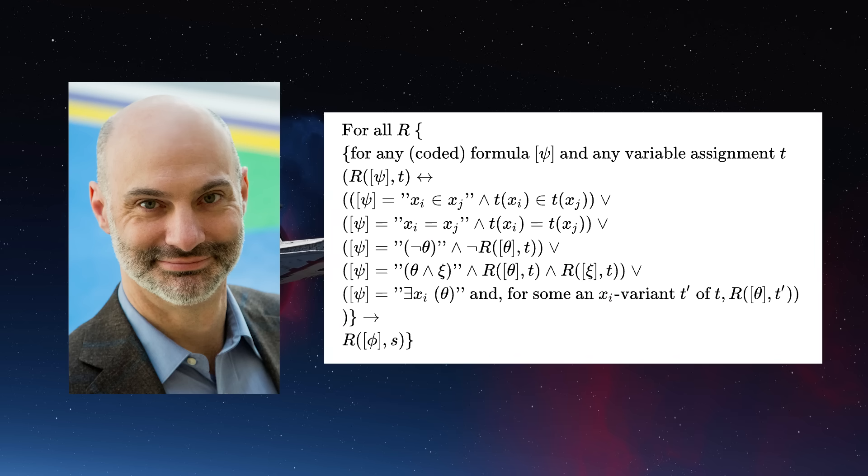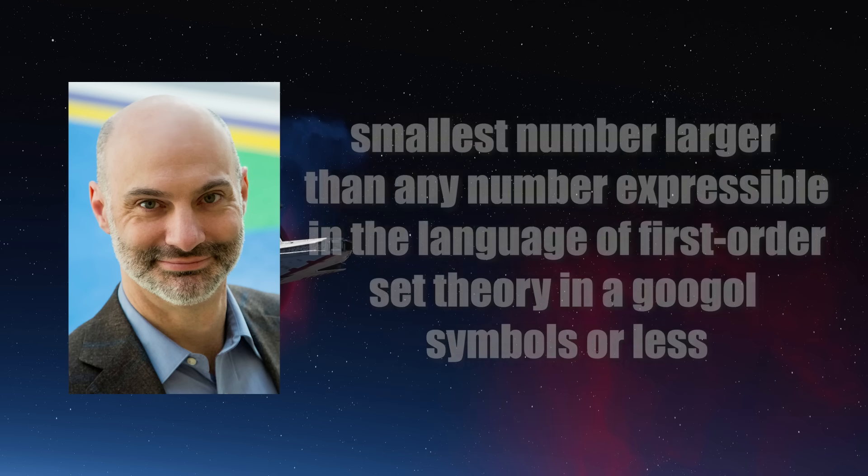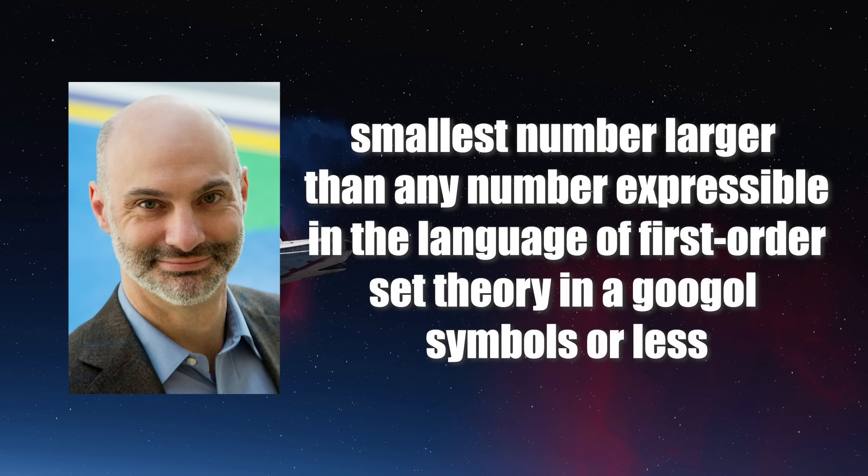The final number that Augustine Rayo conjured up is now known as Rayo's number, which is defined as the smallest number larger than any number expressible in the language of first-order set theory in a Google Symbols or Less.